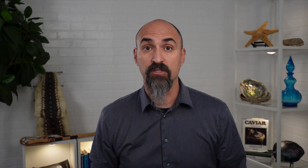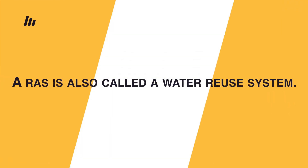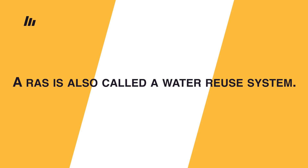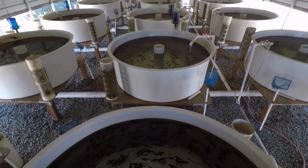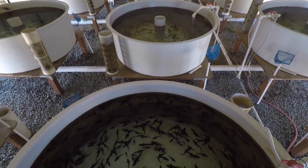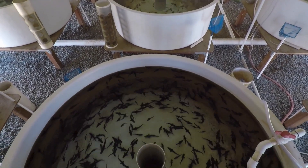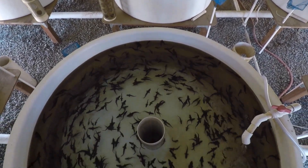A recirculating aquaculture system is also called a water reuse system. Water reuse is a common term used in wastewater treatment, except in this case we're using it to feed and grow fish. They could be freshwater fish or marine fish for that matter.